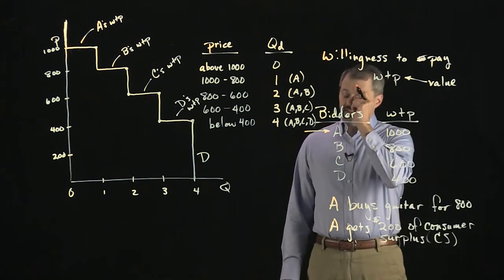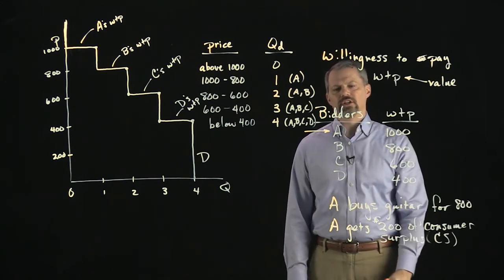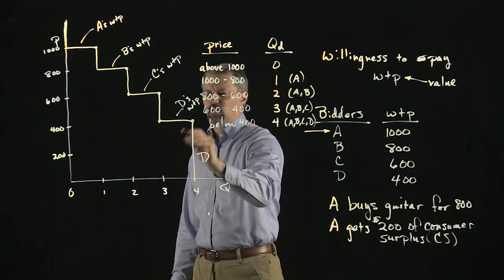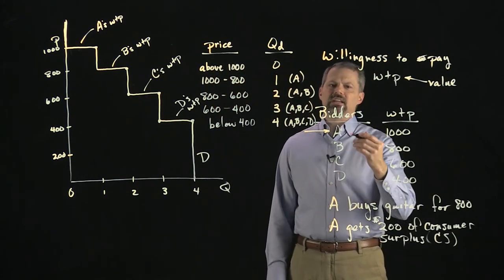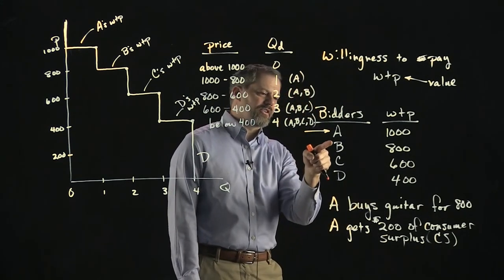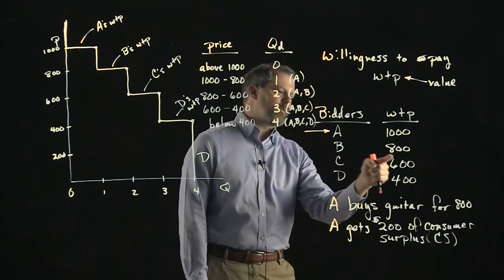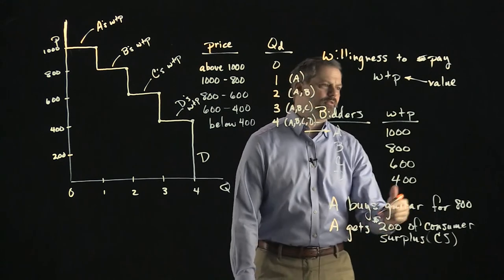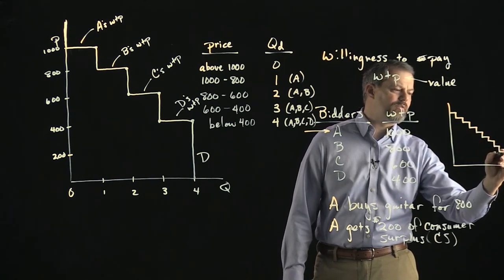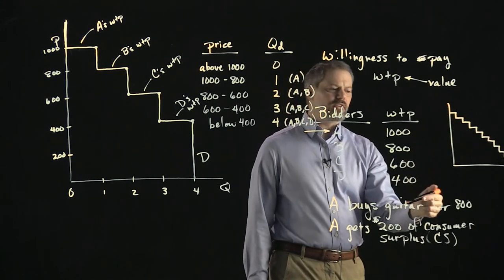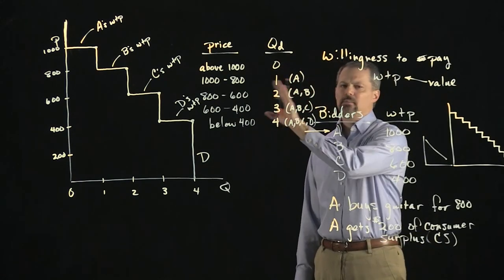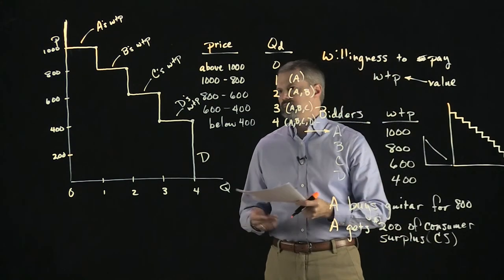The demand curve looks like a set of steps, which is a bit unusual, but it's still downward sloping — the higher the price, the smaller the quantity demanded. It looks like steps because we have discrete units of the good and a small number of buyers. If we had many more buyers — someone willing to pay $900, $700, $500, $300 — we'd have more steps, and eventually the demand curve would smooth into the familiar shape.